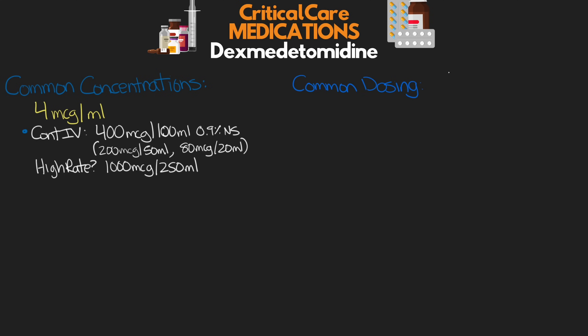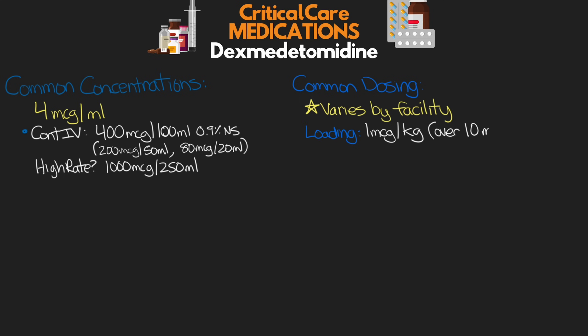As for common dosing, this has varied from facility to facility in terms of max dosing. We can use it with or without a loading dose. If we do an initial loading dose, that is 1 microgram per kilogram, given slowly over 10 minutes — be careful and watch for bradycardia and hypotension specifically when giving this loading dose. As far as the maintenance infusion, the dose can be anywhere from 0.2 to 1.4 micrograms per kilogram per hour, titrated to maintain an ordered RASS score.